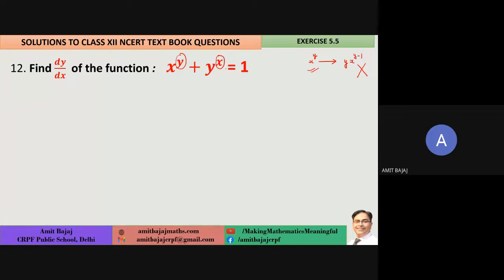So what is the approach? It's a function raised to the power function, but since the two functions are separated by a plus sign, I cannot take the log both the sides. So what I am going to do: u + v approach, where u is x^y and v is y^x. Differentiate the above relation: du/dx + dv/dx would be 0. Let us now consider u separately.